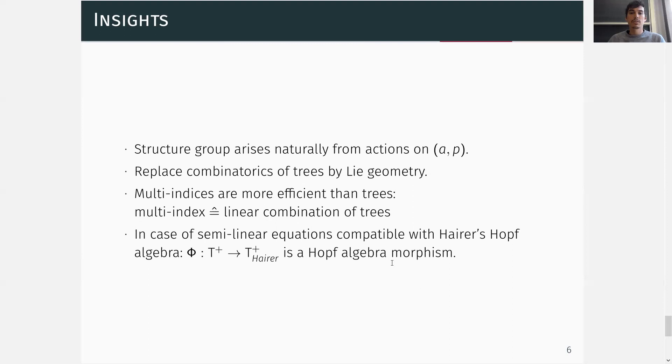Why is this an advantage? Because we can always translate the multi-index into a linear combination of trees, where the important thing is that it's a linear combination of trees. This means that the multi-index groups together a lot of trees, and this is in particular an advantage when it comes to renormalization, because then we have to deal with much less terms.